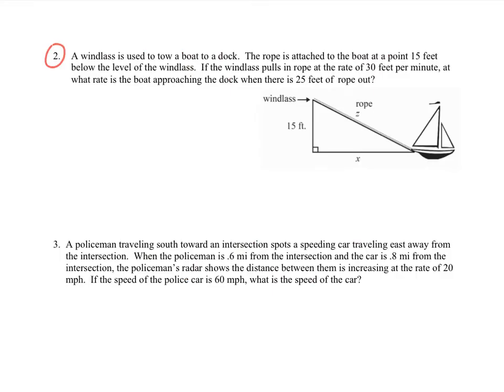So let's look at number two. Oh, this looks like one of those right triangles. If you read this, a windlass is used to tow a boat to a dock. The rope is attached to the boat at 0.15 feet below the level of the windlass. If the windlass pulls in rope at a rate of 30 feet per minute, at what rate is the boat approaching the dock when there is 25 feet of rope out?